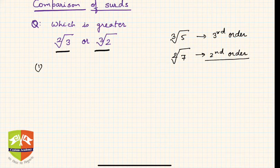We have learned how to convert them into the same order. The order here is 2, order here is 3, so we have to convert both into the same order. Once the orders are same, you can compare the two surds. How do we make them the same order? Find the LCM of 2 and 3, which is 6.